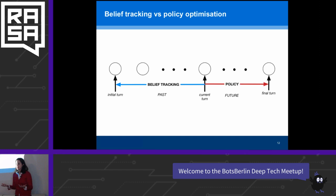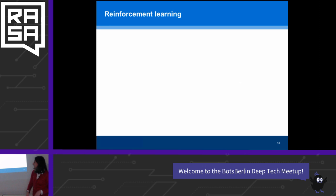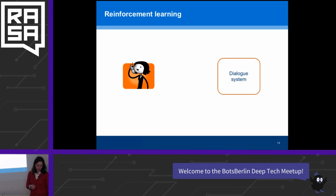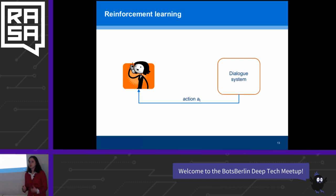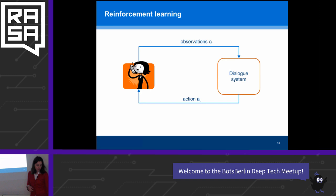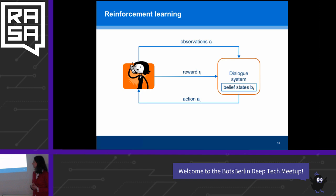Which machine learning framework allows us to perform planning? Reinforcement learning. In reinforcement learning, our dialogue system talks to our user, takes some actions, and the user responds. Because we can never be sure what the user exactly meant, we call what we get from the user 'observations.' Based on these observations, the dialogue system updates its belief states, and occasionally it also gets a reward from the user.